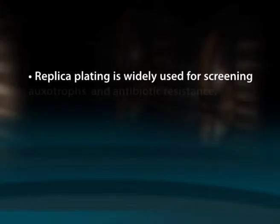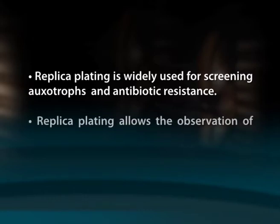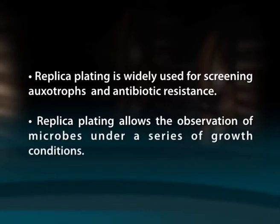Replica plating is a widely used method in mutation studies to compare the master plate and any secondary plates and to screen for a desired phenotype. The sensitivity of a particular organism to any substance can be monitored by checking the presence of a colony on the master and secondary plates. Replica plating is widely used for screening auxotrophs and antibiotic resistance. It allows the observation of microbes under a series of growth conditions. The bacteria are grown in an environment that is not selective for a given mutation. This technique is used to transfer the members of each colony to a selective environment. For convenience, 30 to 3000 colonies are replica plated due to the difficulty in streaking each out individually onto a separate plate.